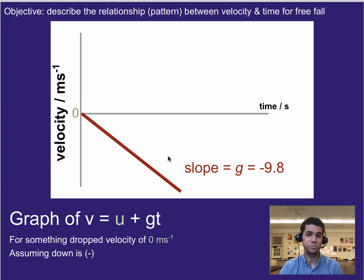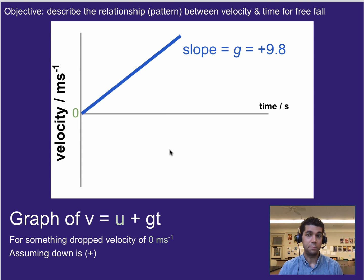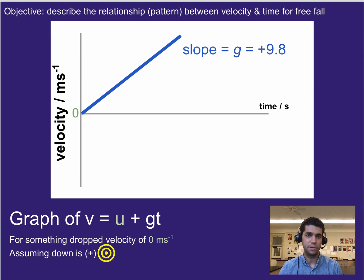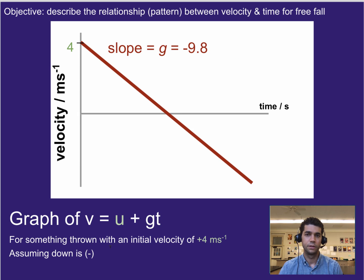Now, it might be negative if you're calling downwards negative, or it might be positive if you call downwards positive. But regardless, both of these graphs describe something that is falling. We're just assuming up is positive in this graph, and we're assuming up is negative in this graph, or in other words, down is positive.